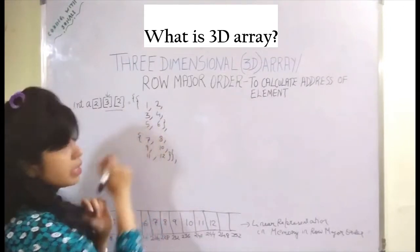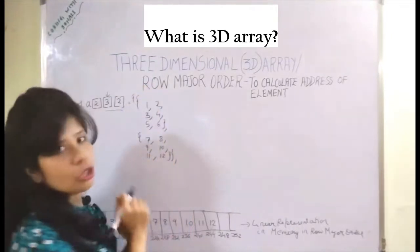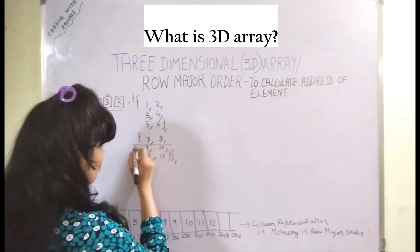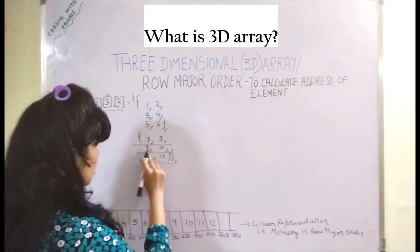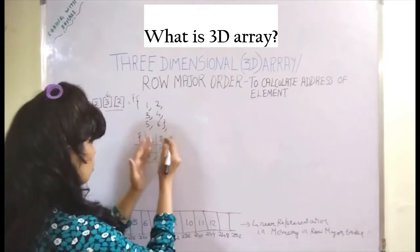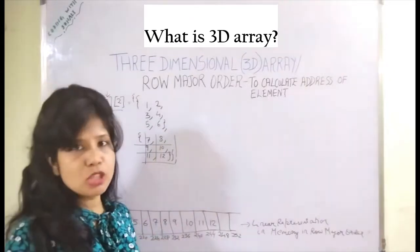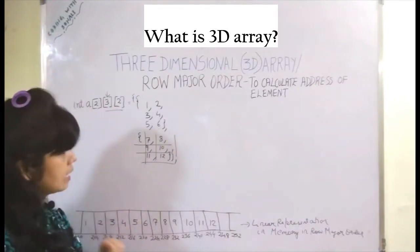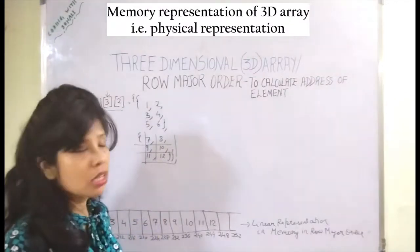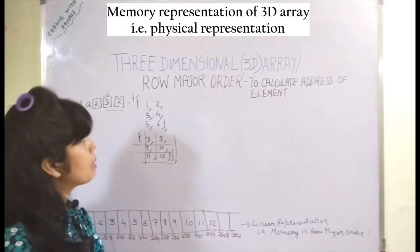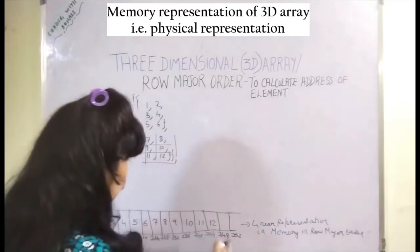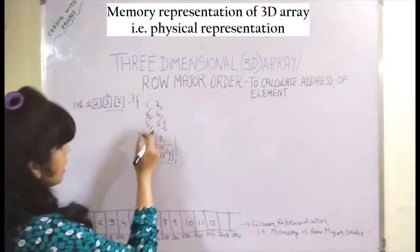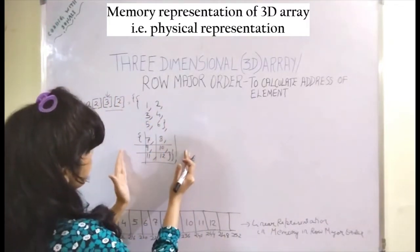The first element has one row, two rows, three rows, and one column and two columns. The second element is also a 2D array with three rows and two columns — one column and two columns. These elements are located in contiguous memory locations, one after the other. Now let us see how the array is represented in memory, since we are doing row major order.